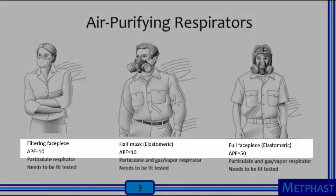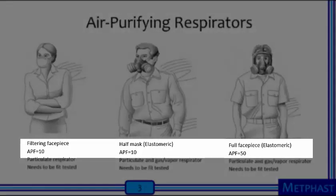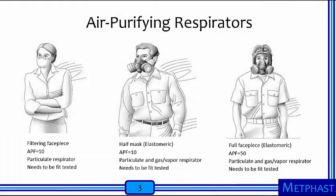The APF of a respirator is the level of protection a properly fitted respirator would be expected to provide a user. For example, an APF of 10 for a respirator means that a user could expect to be protected against a pollutant at a concentration 10 times the occupational exposure limit.